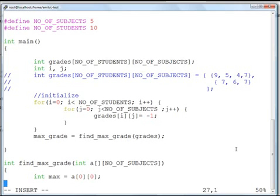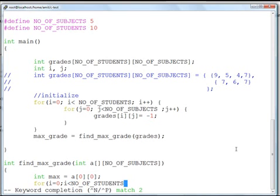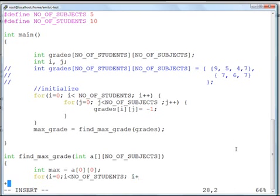And then it's a standard max program. So for again i equal to 0, i less than NO_OF_STUDENTS, i++. Don't forget to write the braces. For j equal to 0, j less than NO_OF_SUBJECTS, j++.